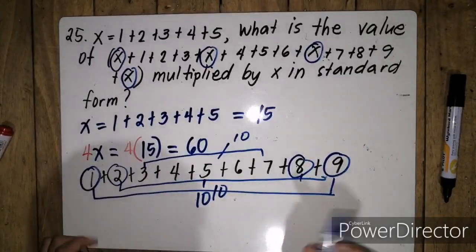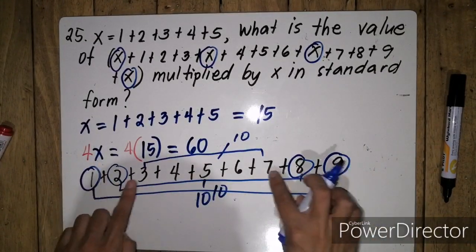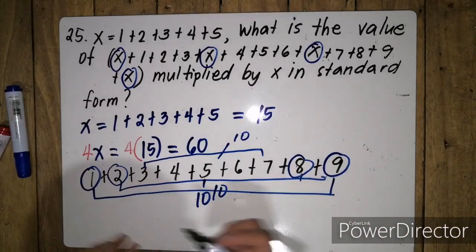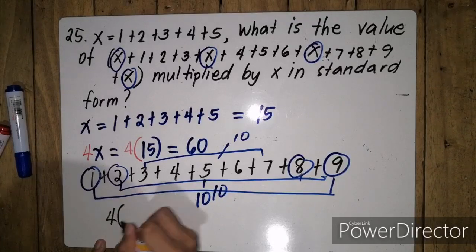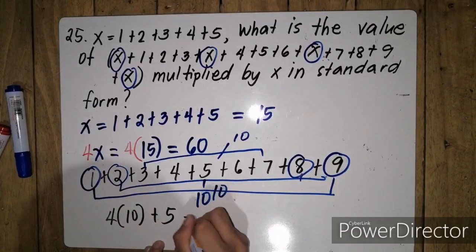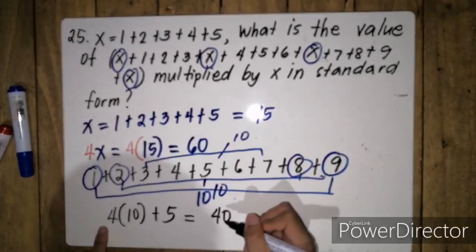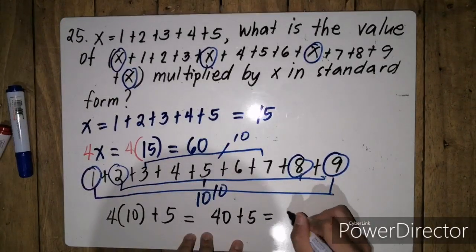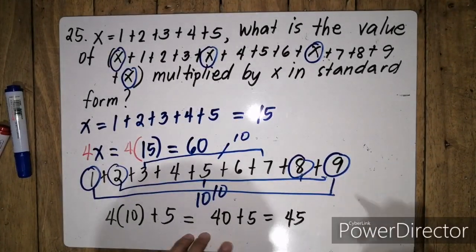So ilang pairs ang mabubuo? So 1, 2, 3, 4 plus 5. So that's simply 4 na 10 plus 5. That's simply 4 times 10, 40 plus 5, which is simply equal to 40 plus 5 equals 45.